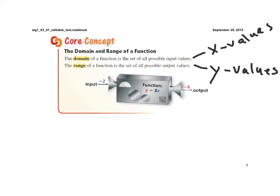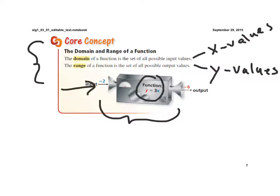Here are two more definitions. The domain of a function is the set of all possible inputs. Looking at this graphic, the input goes into the function, some operation is performed, and what comes out is the output. Typically, the domain values are the x values, and the range, or the outputs, are the y values. Pause this and make sure you get these written down in your notes.